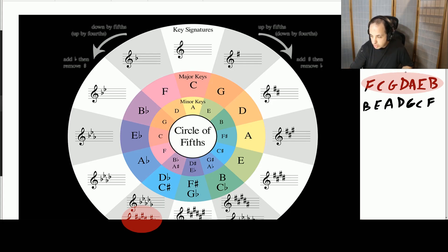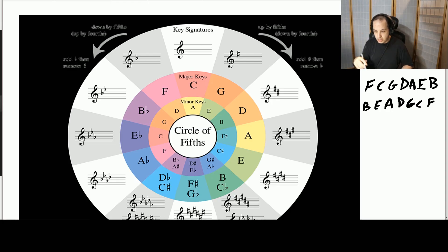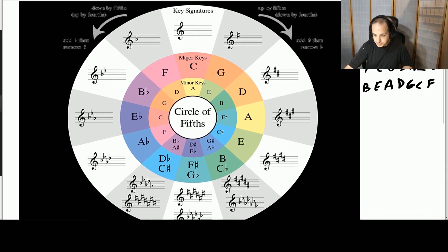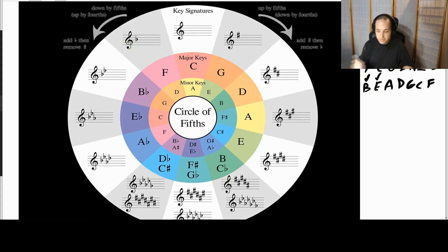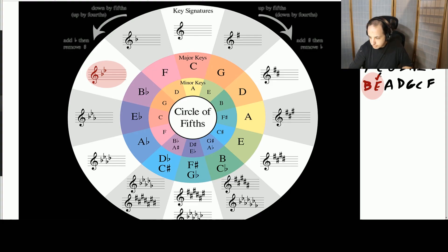The flats work the same way, but they go in the opposite direction around the circle — flats go to the left, sharps go to the right. With one flat, your order of flats gives you B flat. Two flats gives you B flat and E flat. If you had all seven flats, they would be B, E, A, D, G, C, F — the entire order of flats.